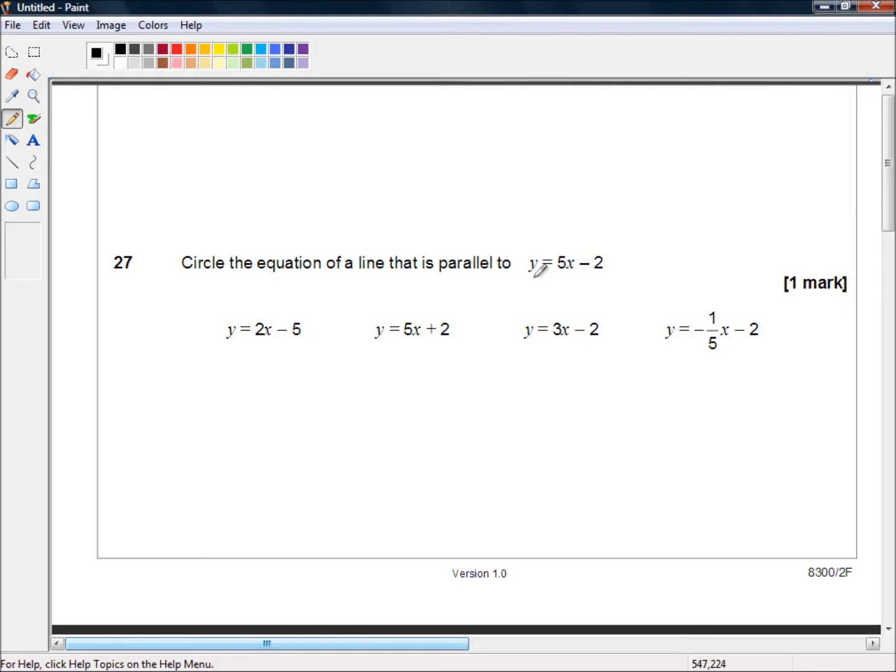Okay, so the first thing to note is that this is in what we call slope-intercept form where 5 is your slope and negative 2 is your y-intercept. Two lines are parallel if they have the same slope. So we're looking for an equation that is y equals 5x plus or minus something.